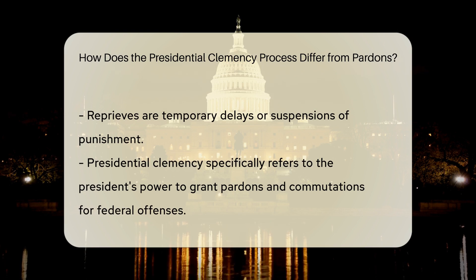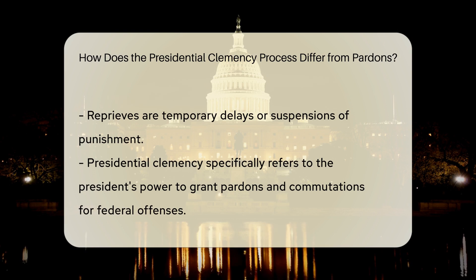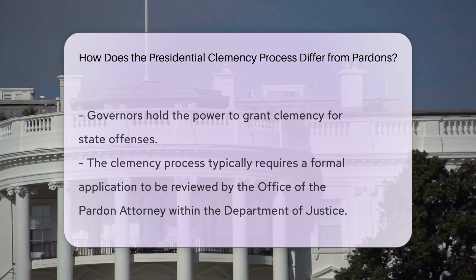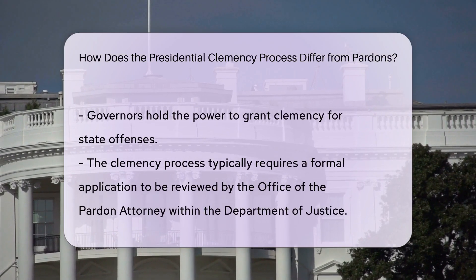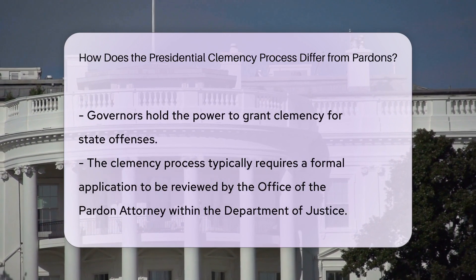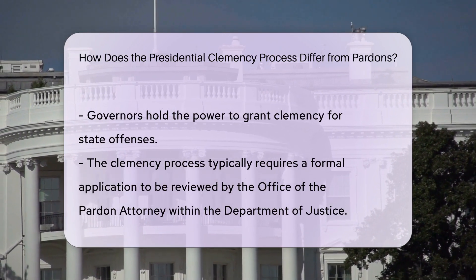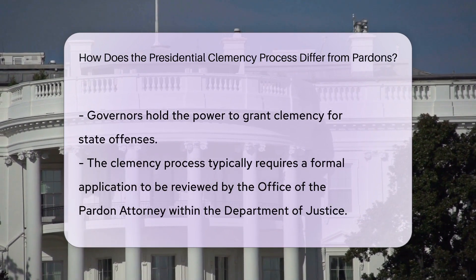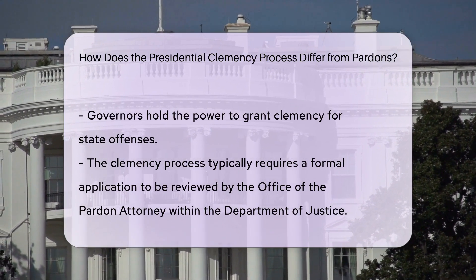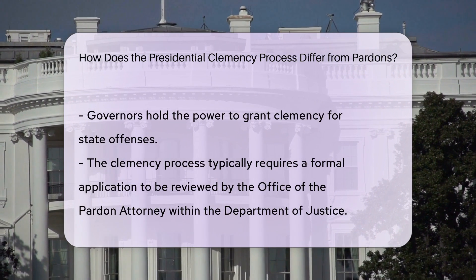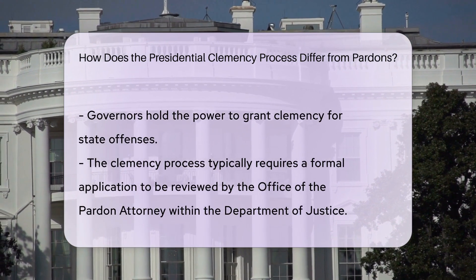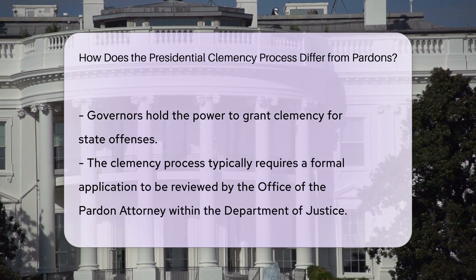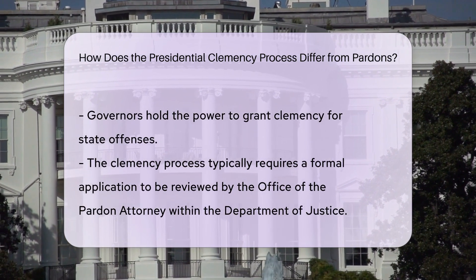The presidential clemency process involves the president's power to grant pardons and commutations. The president has the authority to grant clemency for federal offenses, while governors have the power to grant clemency for state offenses.